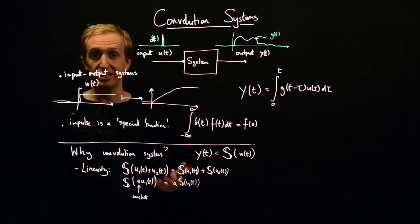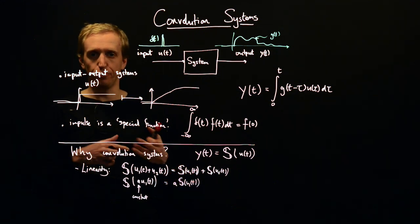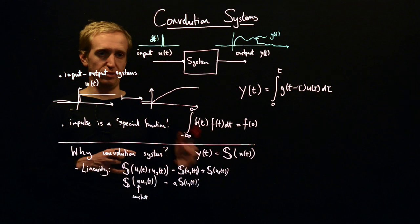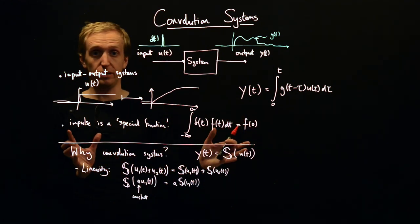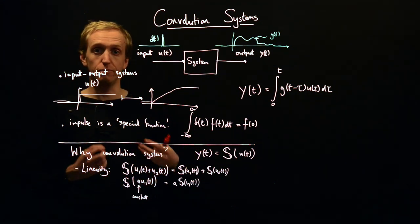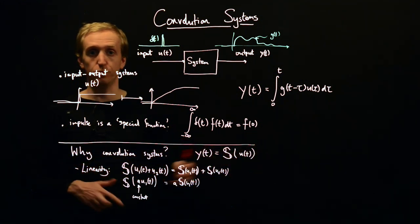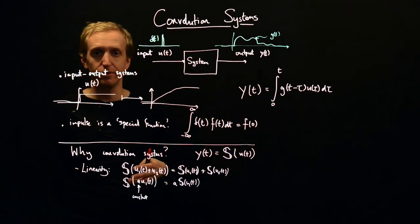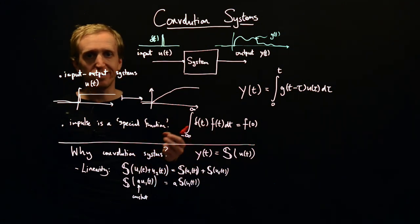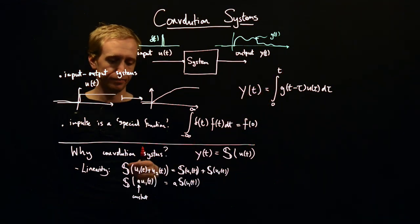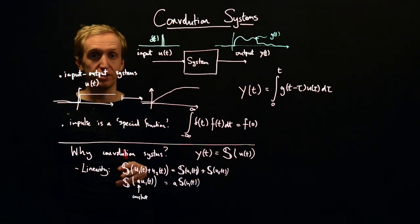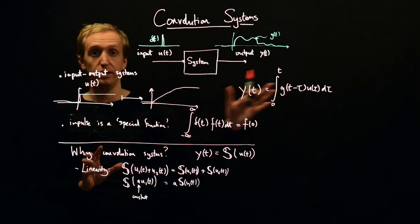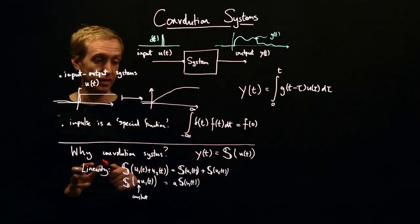Under what conditions is linearity a valid assumption? For small signal behaviours, you can well approximate almost any system by a linear system. Everything in this course is for linear systems — linearity is valid for small signals. But if in your analysis or simulations you see signals getting large, you may need to question whether linear systems theory applies, or whether you need to do something more sophisticated, like taking a non-linear control course. This is our first and most controversial assumption required to give us a convolution system.